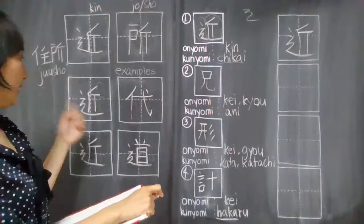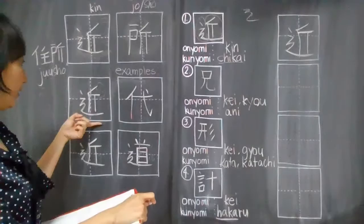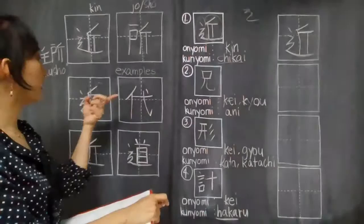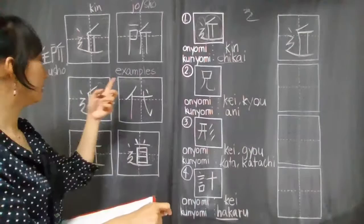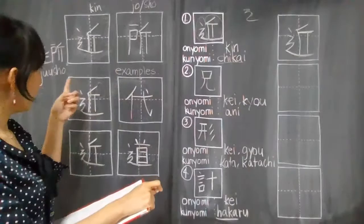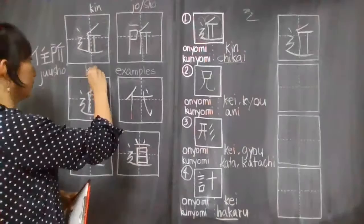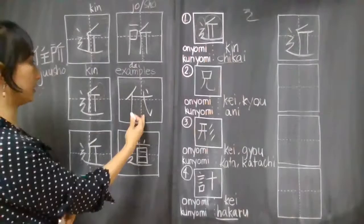The next example that I have for you for this kanji is this one. This one is chikai no kanji plus jidai. Jidai no kanji. Jidai means generation. So when it's near generation, it means that this word is modern times. That's why to read this is kin-dai. Kin-dai. The meaning is modern times. Chikai, near, time, jidai.